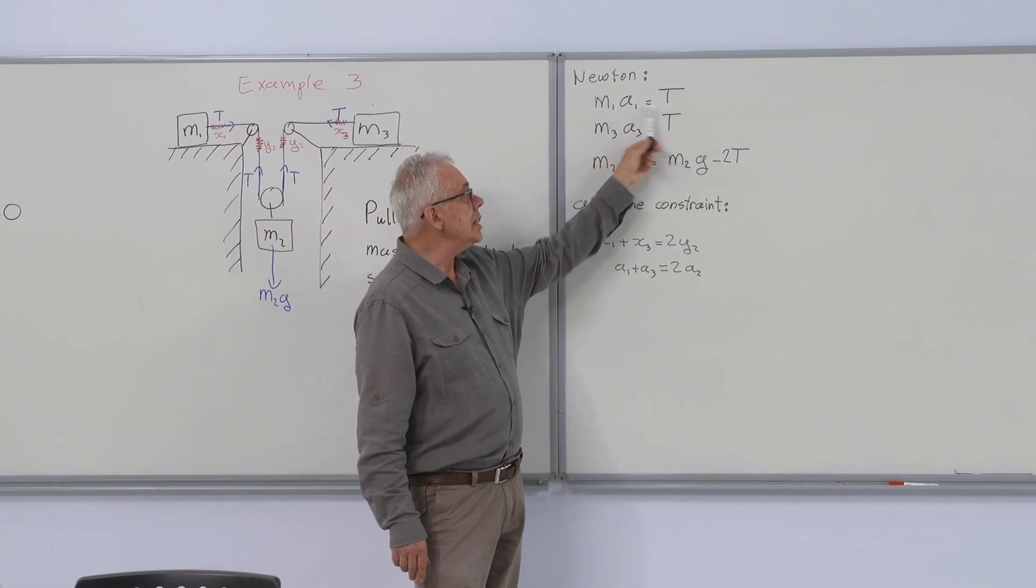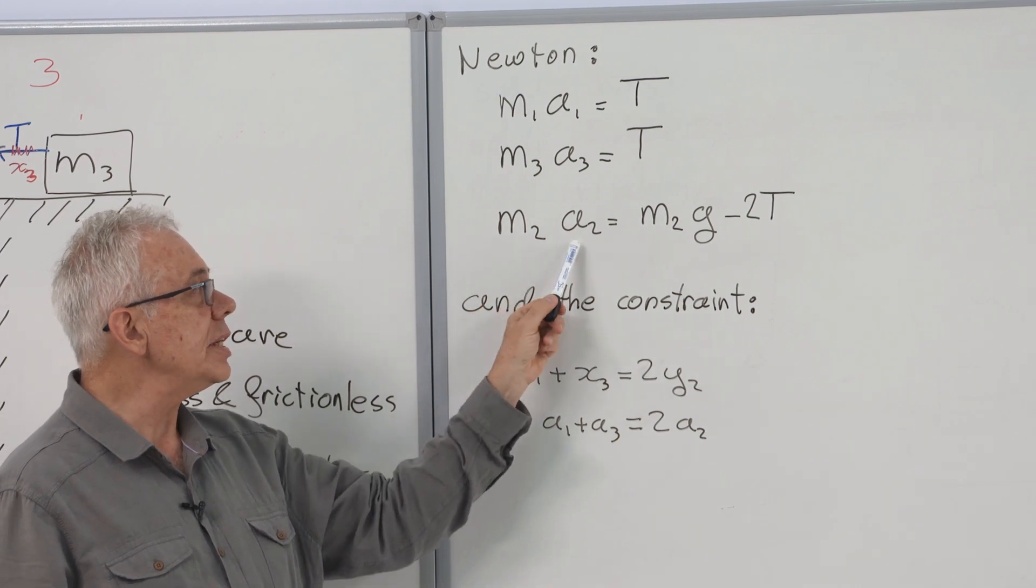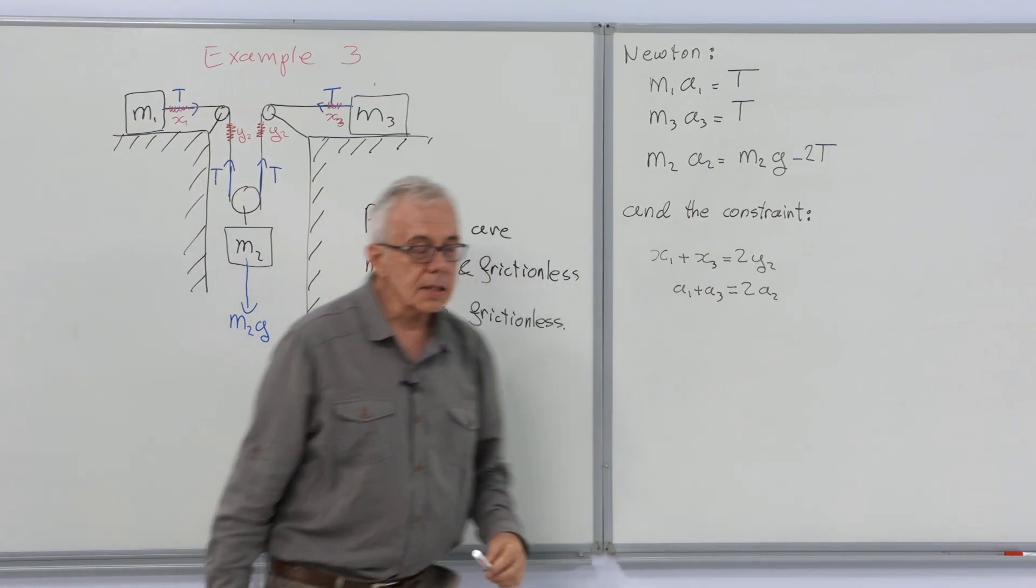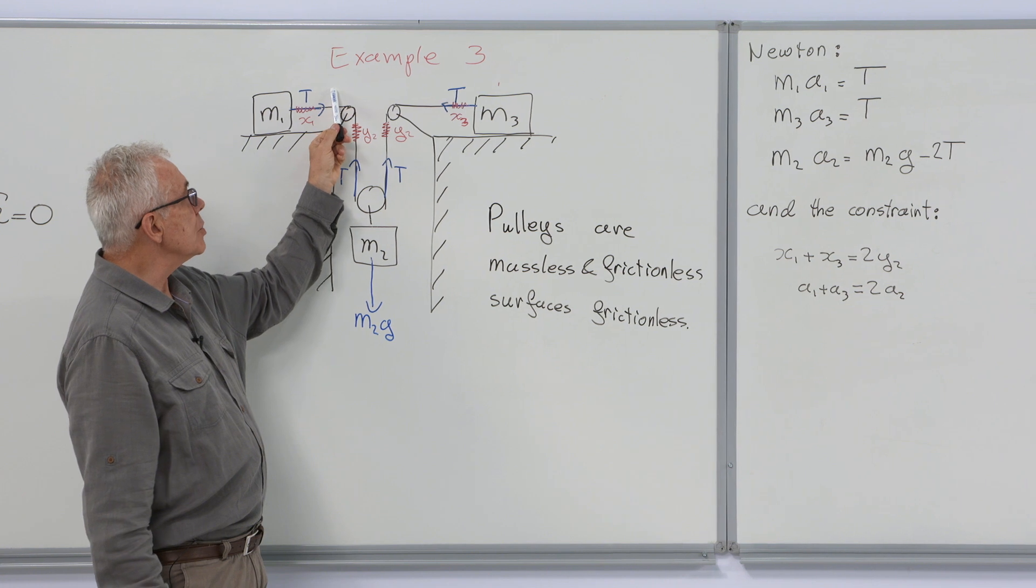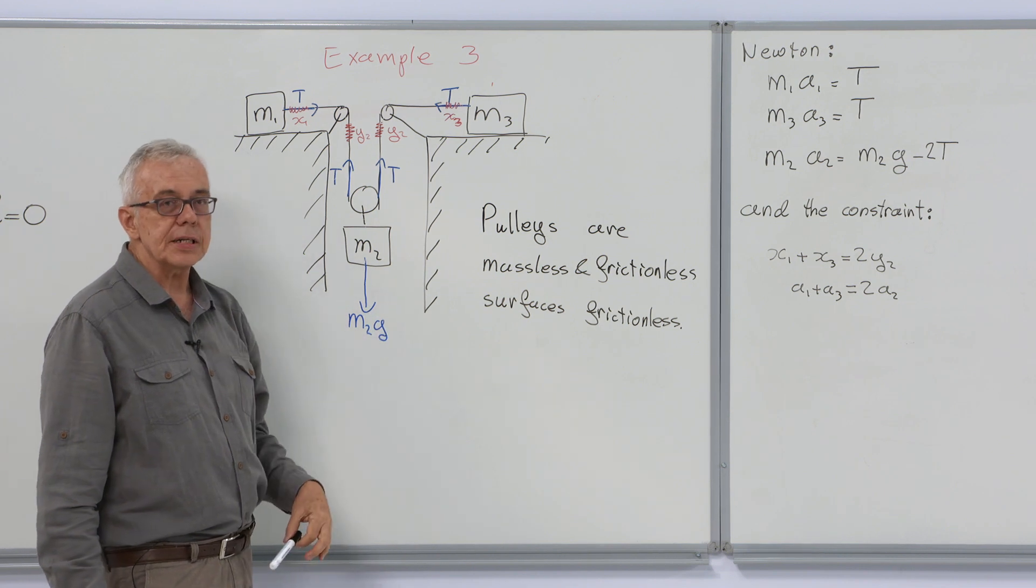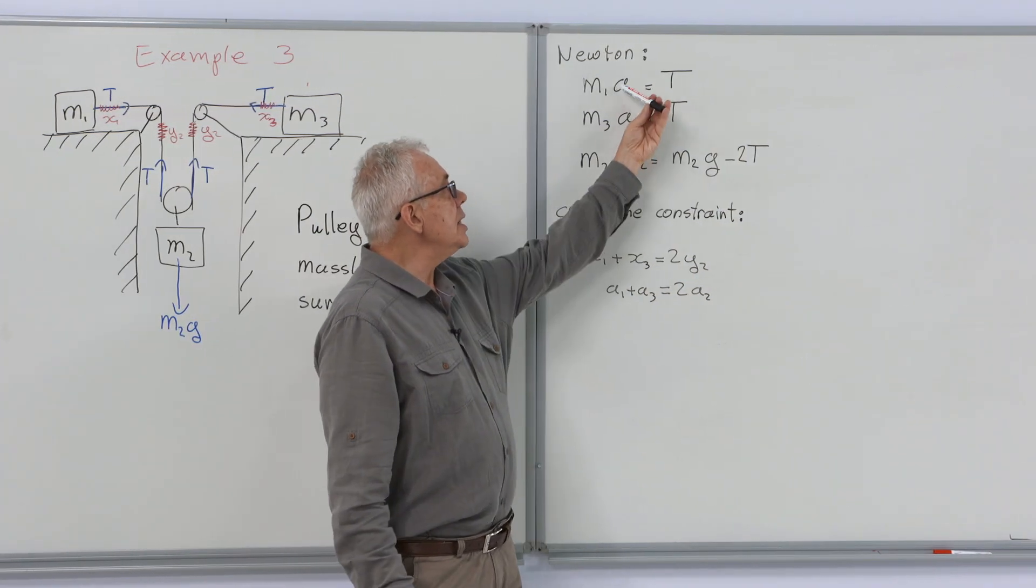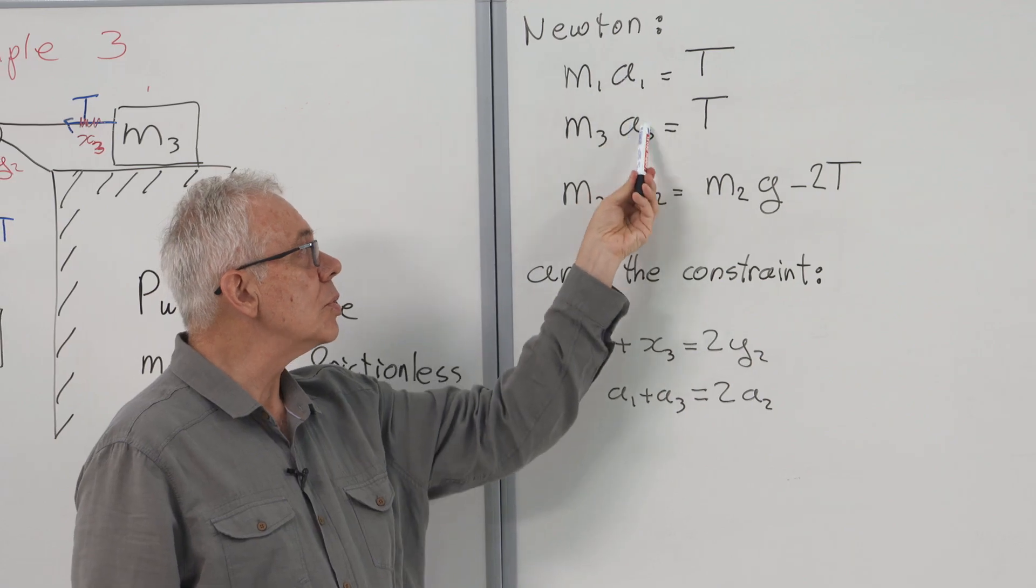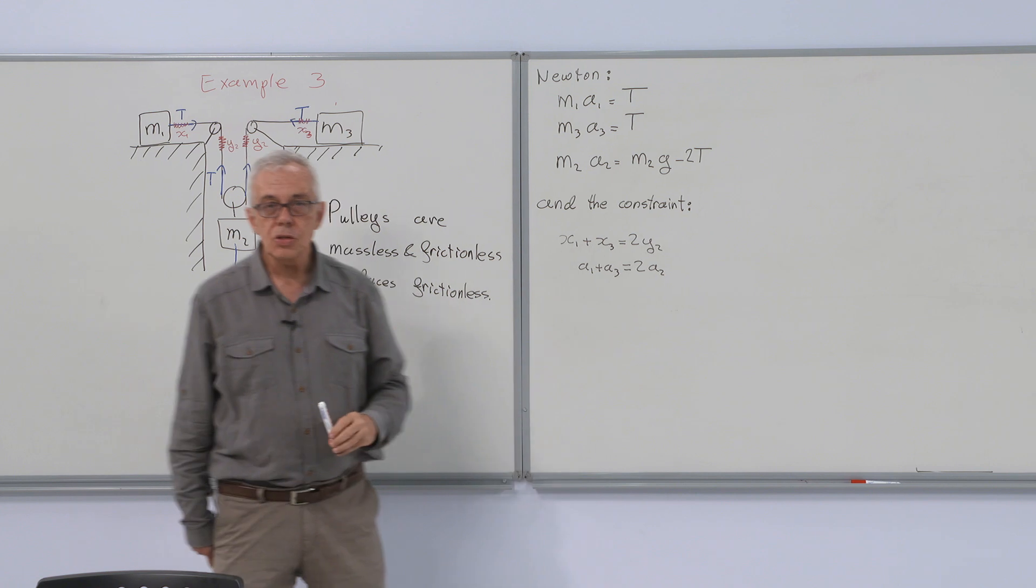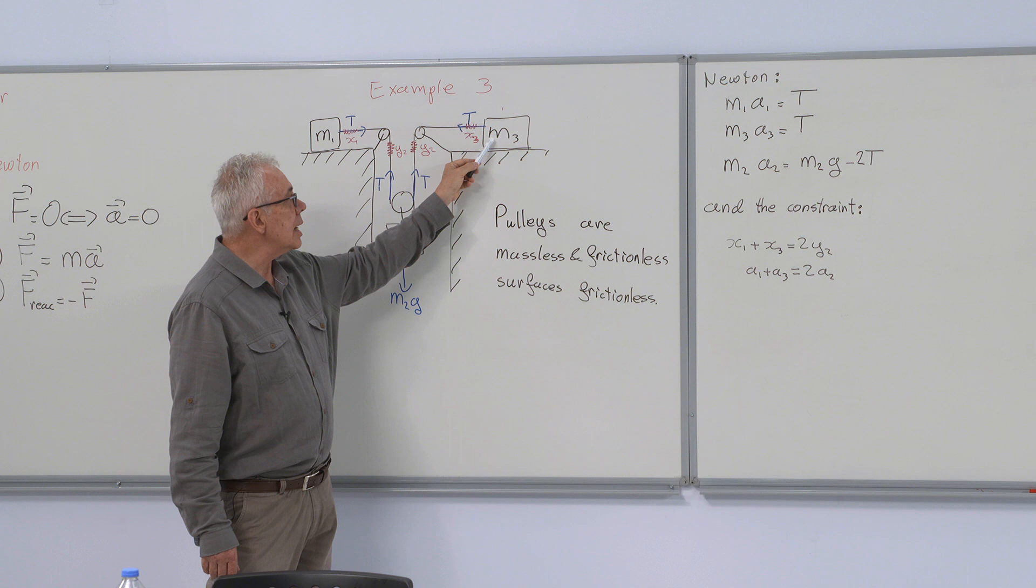Writing Newton's equations, I have M1 A1 equals T, M3 A3 equals T, and for the hanging mass, M2 A2 equals M2g minus 2T. Here, I took the rightward direction for the first mass, leftward direction for the third mass, and the downward direction for the second mass as positive. Now, I have three equations but four unknowns. One more equation is needed. That is the constraint equation. Namely, the accelerations are not independent.